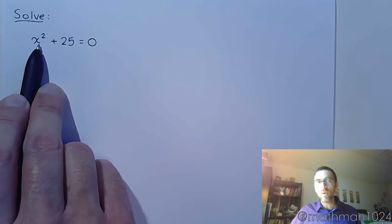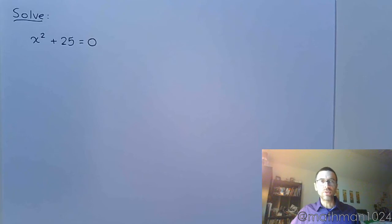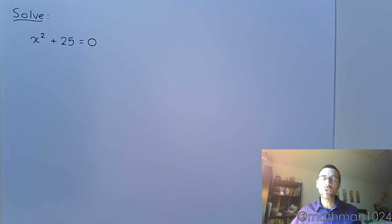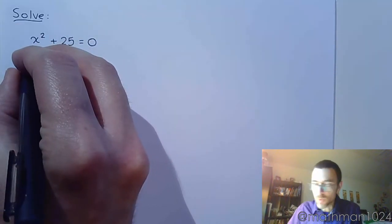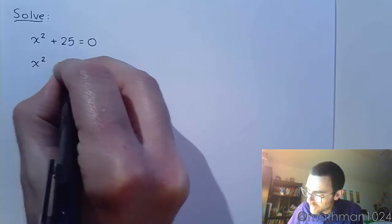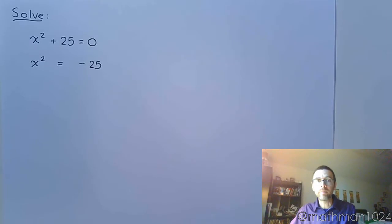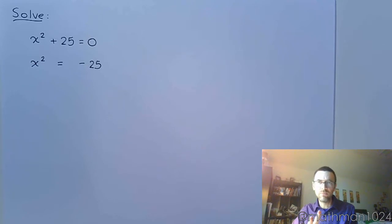In order to use the square root property, you have to get the square by itself first. If you try to apply the property right now it's not going to go well. So the first thing we do is get X squared by itself — we do that simply by moving the 25 to the other side, giving us minus 25. Now when using the square root property, there are a couple ways of showing this.